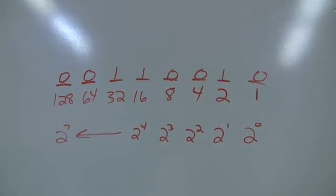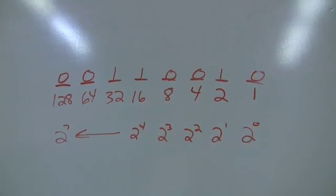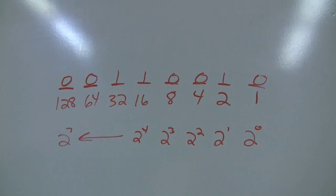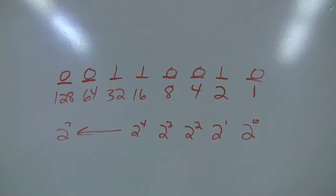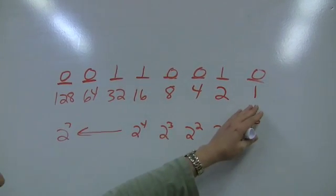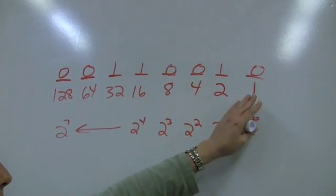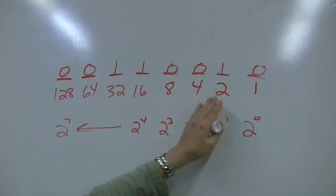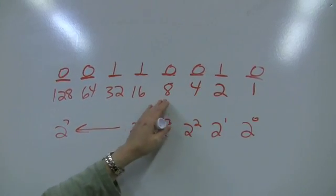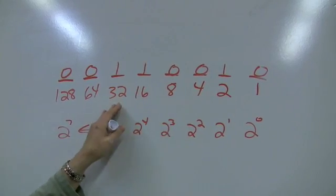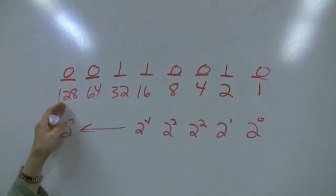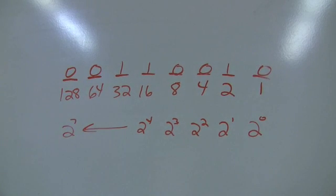It's okay if you don't completely get the whole base 2 idea, but it's important that you know that you always write 1, 2, 4, 8, 16, 32, 64, 128 in that order.